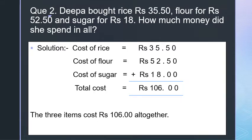Now Question No. 2: Deepa bought rice for Rs. 35.40, flour for Rs. 52.50, and sugar for Rs. 18. How much money did she spend in all?